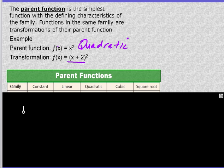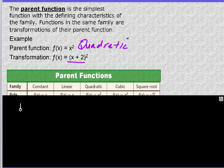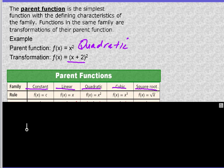These are the parent functions that we need to understand. This is the family name: constant function, linear, quadratic, cubic, and square root. This is the rule or the equation for the basic parent function: f of x equals c, linear f of x equals x, f of x is x squared, f of x is x cubed, and f of x is the square root of x.